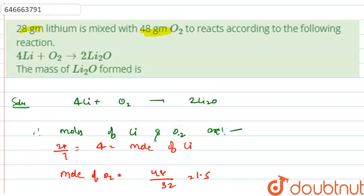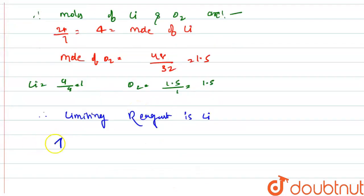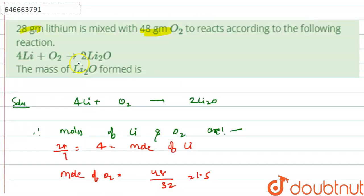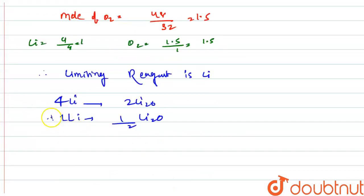From the stoichiometry, 4 moles of lithium gives 2 moles of Li₂O. Therefore, 1 mole of lithium gives 0.5 moles of Li₂O. Since we have 4 moles of lithium, we get 2 moles of Li₂O.